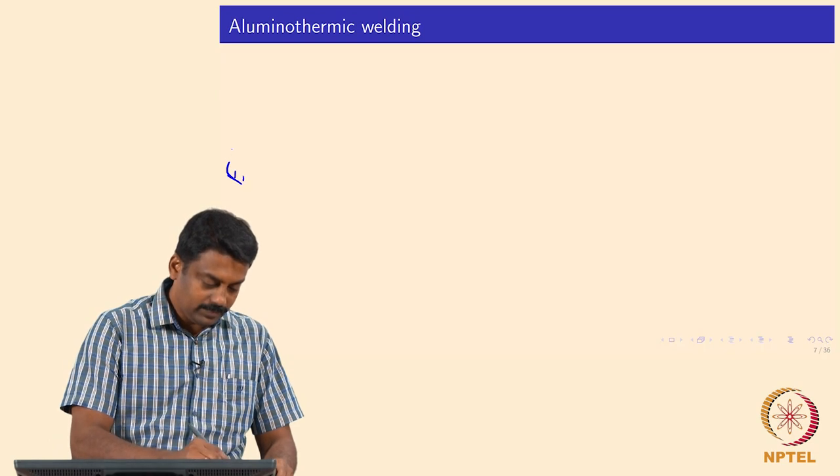We will start from the last class. Last class we already started the last chapter on other welding processes. We looked at two processes that are considered not the conventionally used arc welding processes like GMAW and GTAW. The first one we saw is electroslag welding.